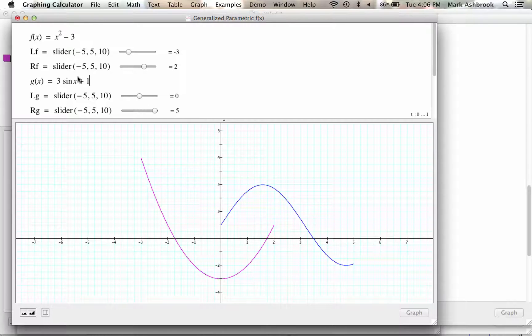Here's f of x, here's g of x. And if I change lf slider, that's what happens. If I change rf slider, that happens with lg slider and rg slider.